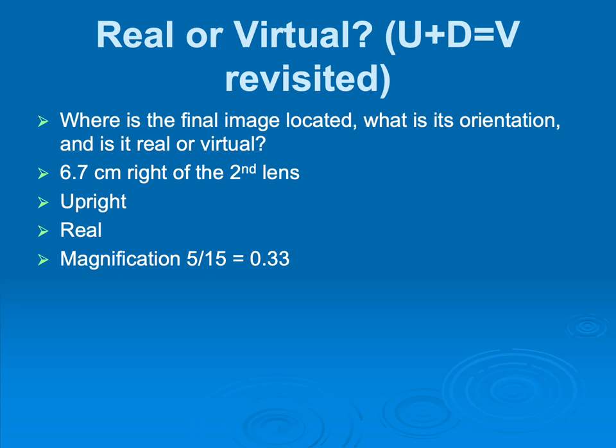So the question originally asked us, where is the final image located? Well, we figured out 6.7 centimeters to the right of the second lens. That was not bad. What is its orientation, and is it real or virtual? Well, let's start with the real or virtual thing. V was plus 15, and when V is positive, it's real. So that's not bad. What was the magnification? It didn't ask us magnification. It looks like I threw that in anyway. And that's U over V, and so we get 0.33. So we know that the final image is smaller than the intermediate image, which is the object forming that final image.